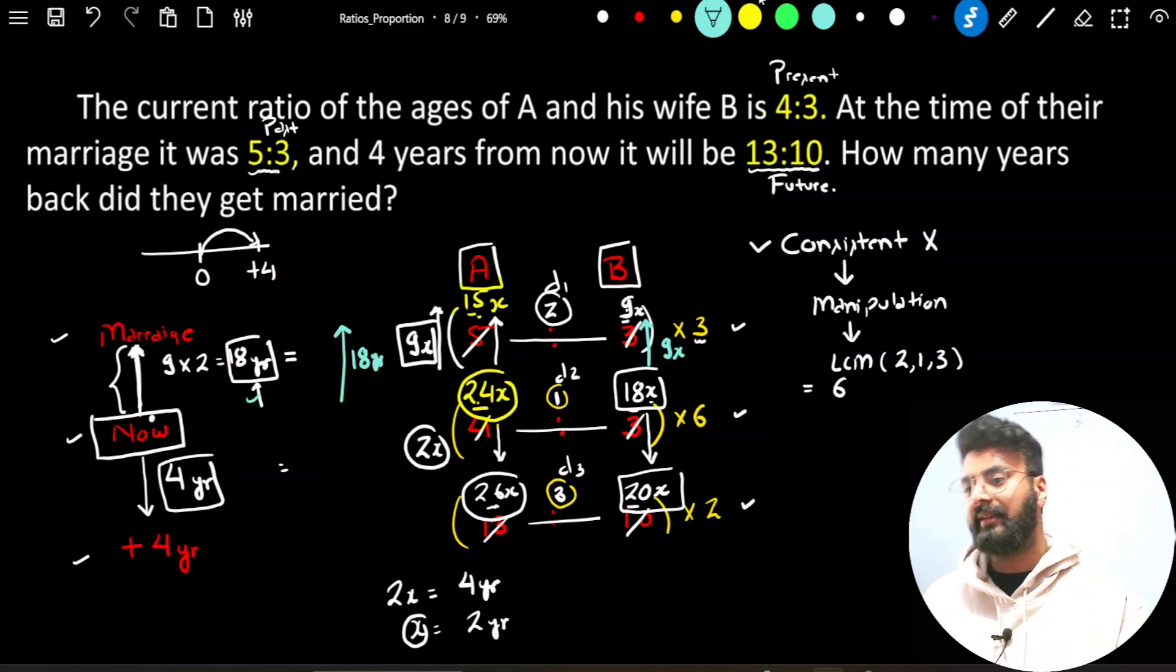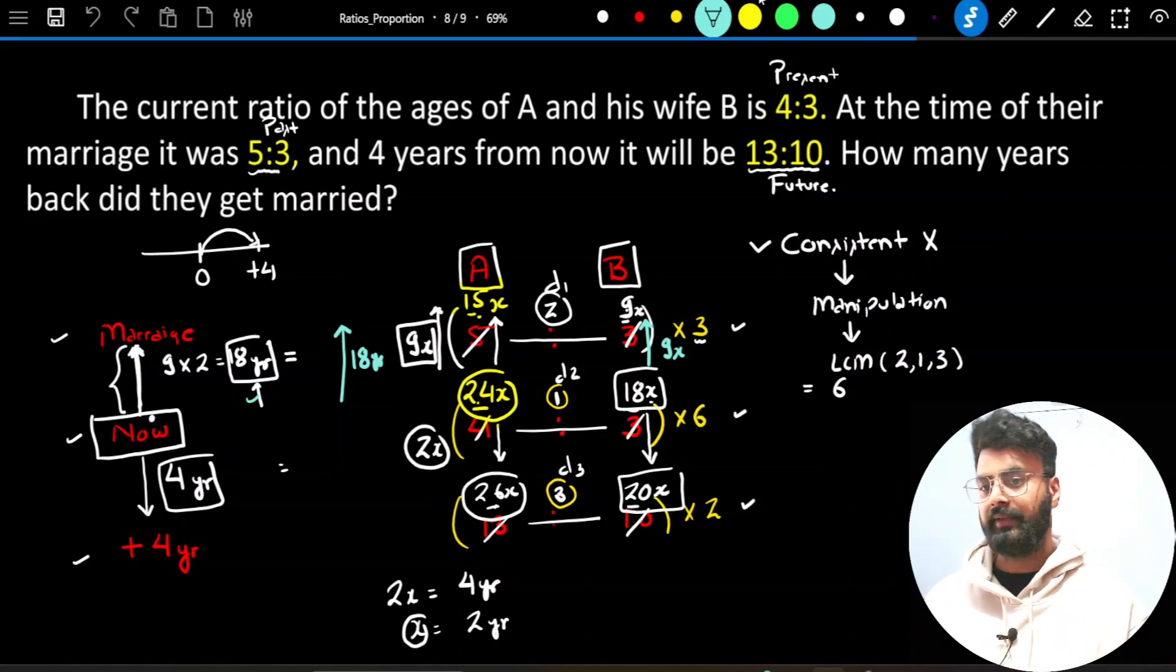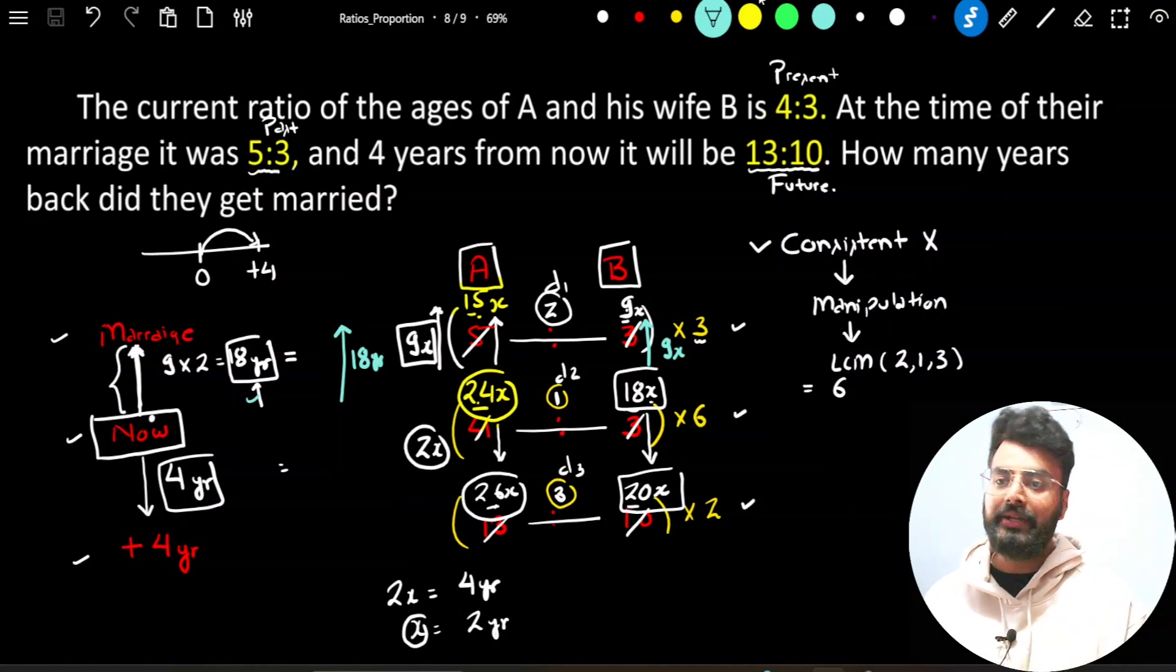So I hope through this explanation, you were able to understand how to deal with a question based on ages, where more than 2 ratios are given to you. The important value addition is: अगर मेरे पास 2 से ज्यादा ratios हैं, तो मुझे एक chronology maintain करनी पड़ेगी, otherwise things will get complicated for me. I hope you have understood the solution, this is all from my side for today, thank you and have a nice day.